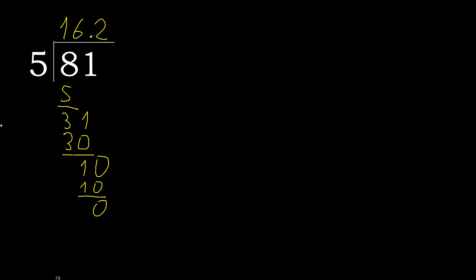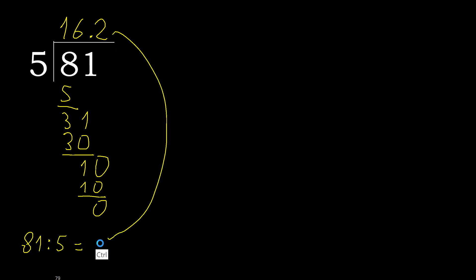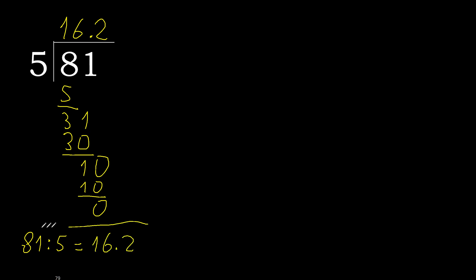0, therefore finish. 81 divided by 5 is 16.2. Finish.